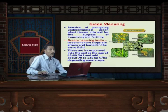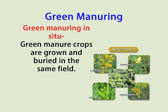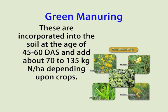Another bulky organic manure is green manure. Green manure is the practice of plowing undecomposed green plant tissue into the soil for the purpose of improving soil fertility. There are two types of green manure: green manure in situ and green leaf manure. Green manure in situ refers to manure for which green manure crops are grown and buried in the same field. These are incorporated into the soil at the age of 45 to 60 days after sowing and after decomposition add about 70 to 135 kg nitrogen per hectare depending on the crop.